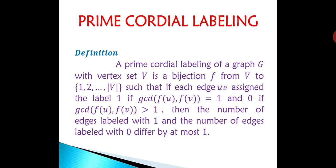The condition is: if GCD(f(u), f(v)) = 1 then we assign the edge the label 1. Also if GCD(f(u), f(v)) > 1 then we assign the edge the label 0. Also the number of edges labelled with 1 and the number of edges labelled with 0 differ by at most 1.